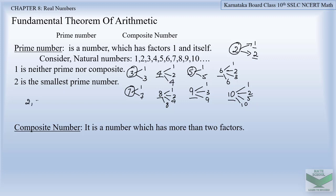Prime numbers continue: 2, 3, 5, 7, 11, 13, 17, and so on. Composite numbers are 4, 6, 8, 9, 10, 12, 14, 15, 16 — all these are composite numbers.